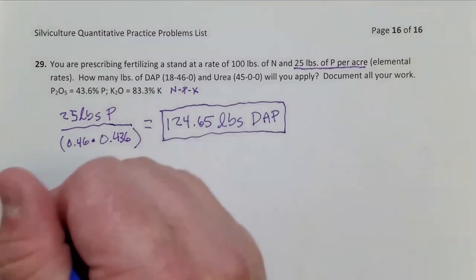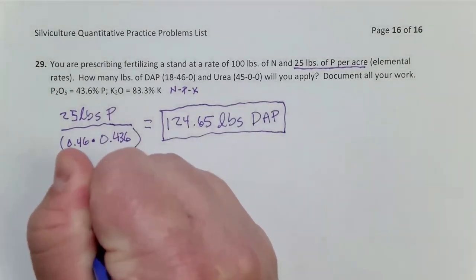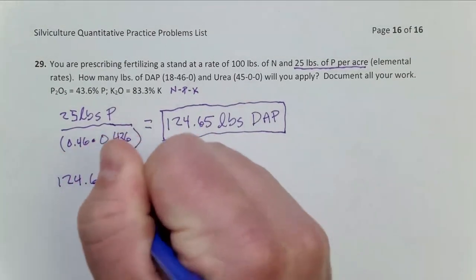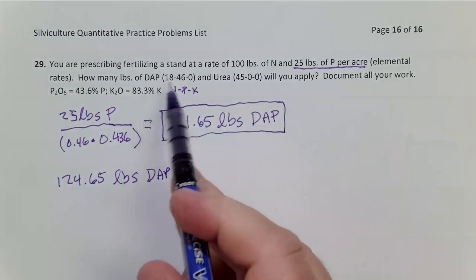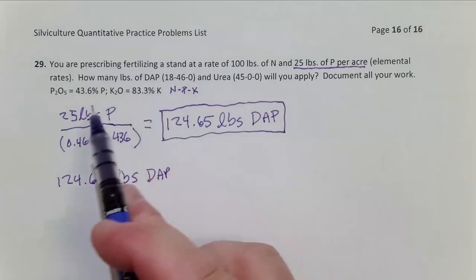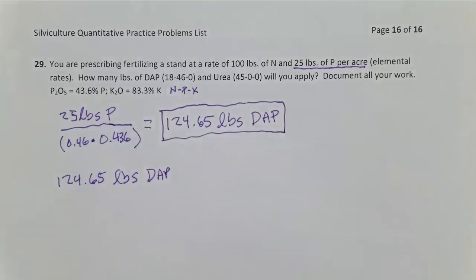And so here we've applied 124.65 pounds of DAP. And I know DAP is 18% nitrogen. The nitrogen number is true. It's not an oxidized form, so we can just use 18%.